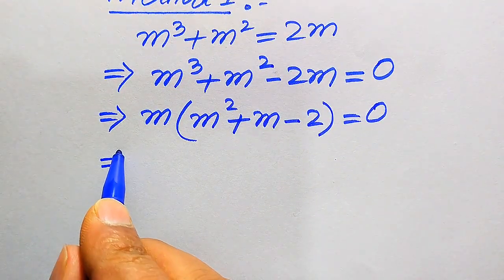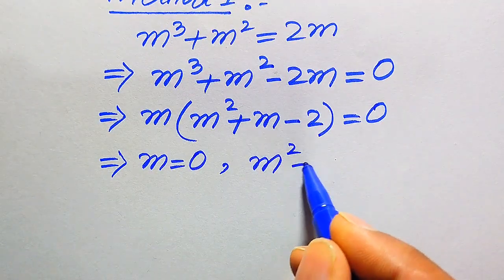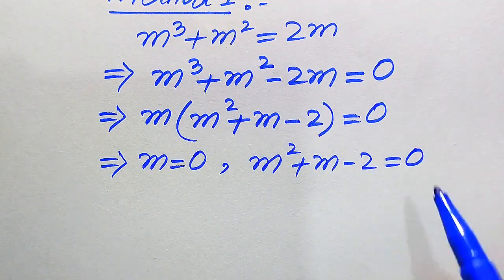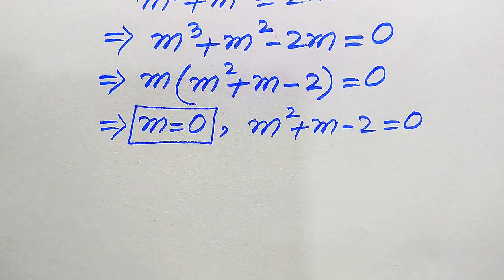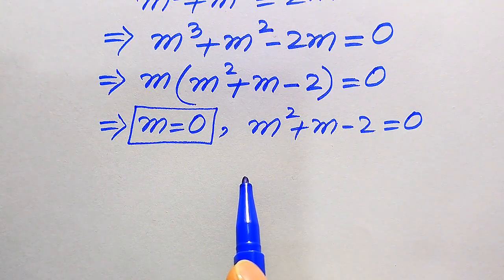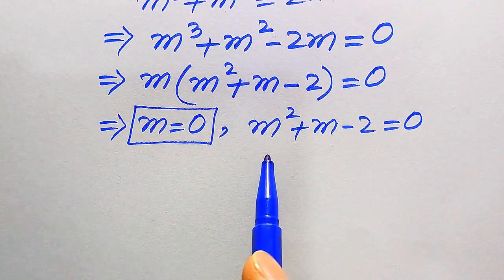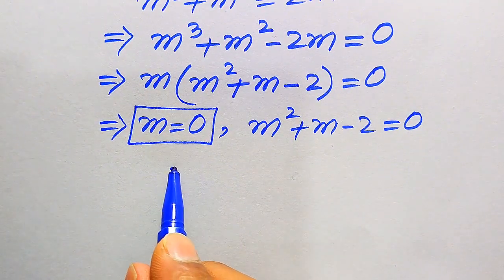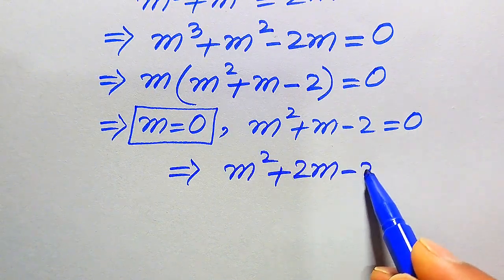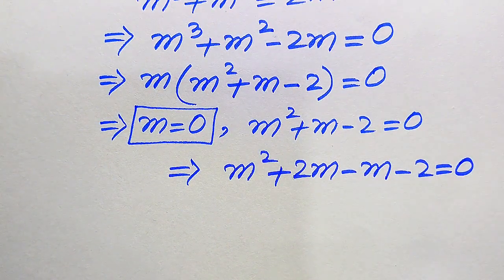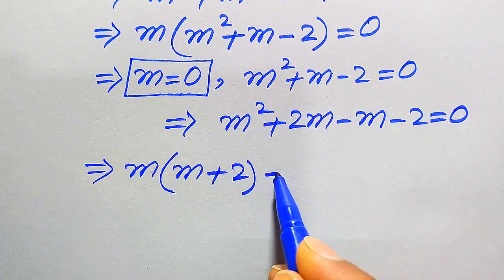We divide this equation into two cases. The first case gives m = 0, which is the first root. The second case is m² + m − 2 = 0. To solve this quadratic by factorization, we break the middle term: m² + 2m − m − 2 = 0. Taking m common from the first two terms gives m(m + 2), and taking −1 common from the last two terms gives −1(m + 2).